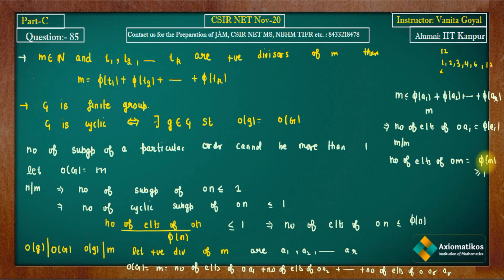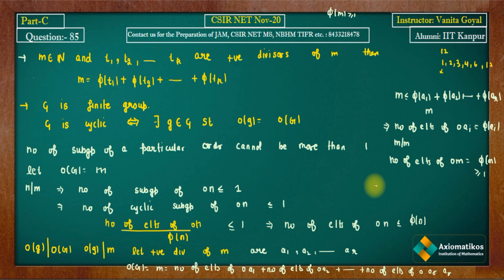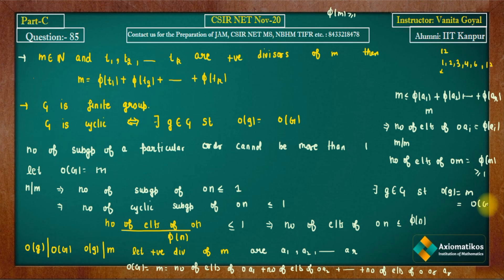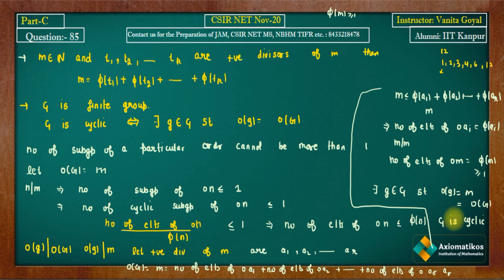Now φ(m) is always ≥ 1 for any natural number m, since 1 and m always satisfy GCD(1, m) = 1. So there exists an element g in G of order m = |G|, which means G is cyclic. Therefore Option B is also true.